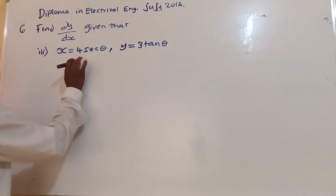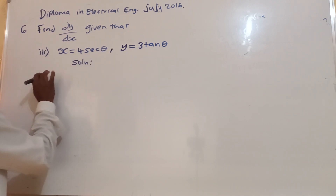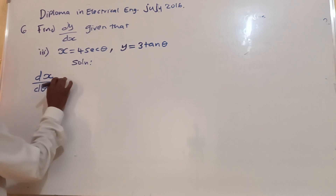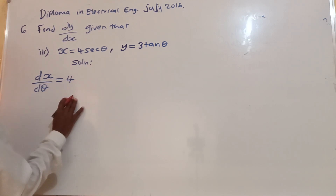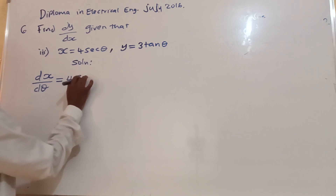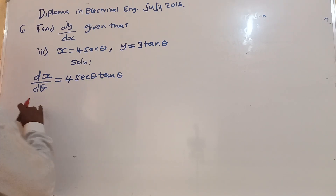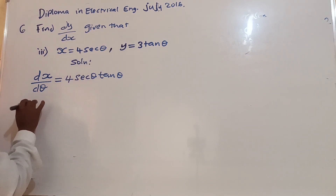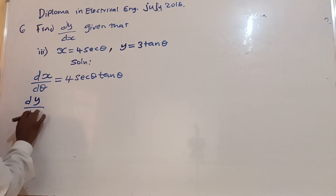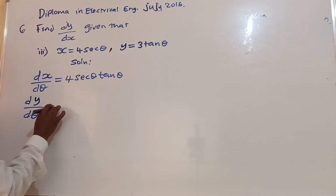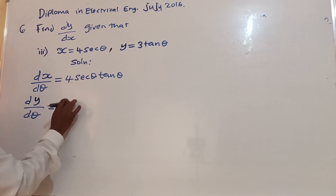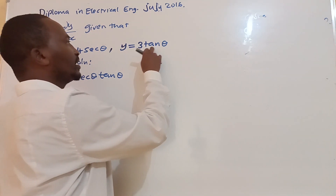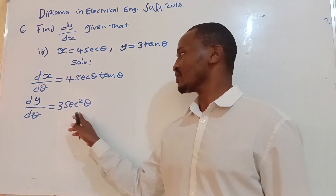Now, how do we go about this one? We are going to differentiate these two parametric equations. The derivative of x with respect to theta is equal to 4 sec theta tan theta — you can also check it on the SMP table. Then, if you differentiate y with respect to theta, you get 3 sec squared theta. If you differentiate tan theta, you get 3 sec squared theta.